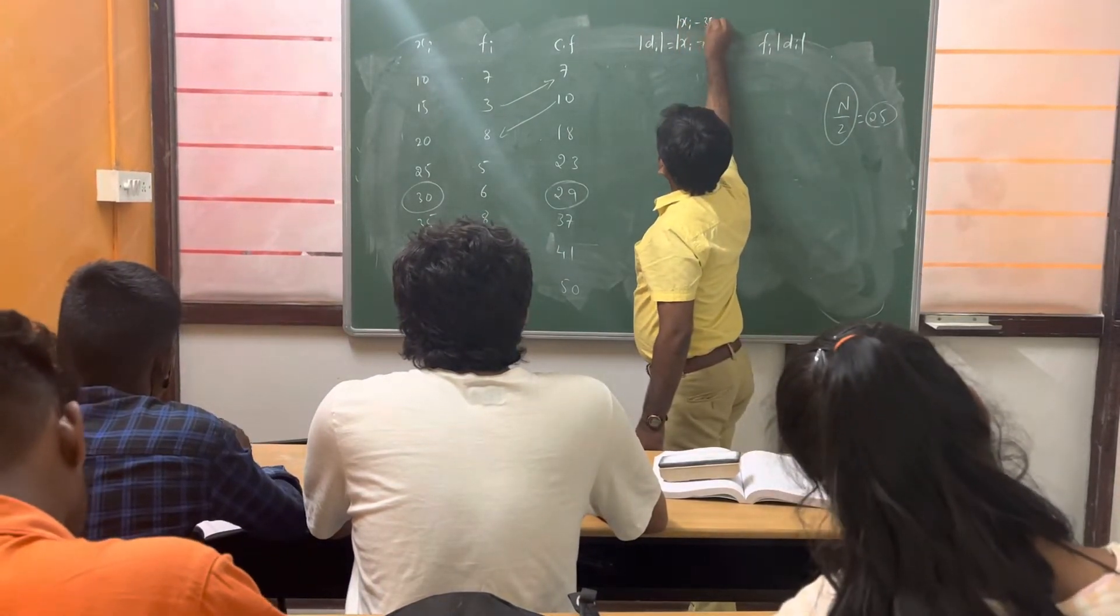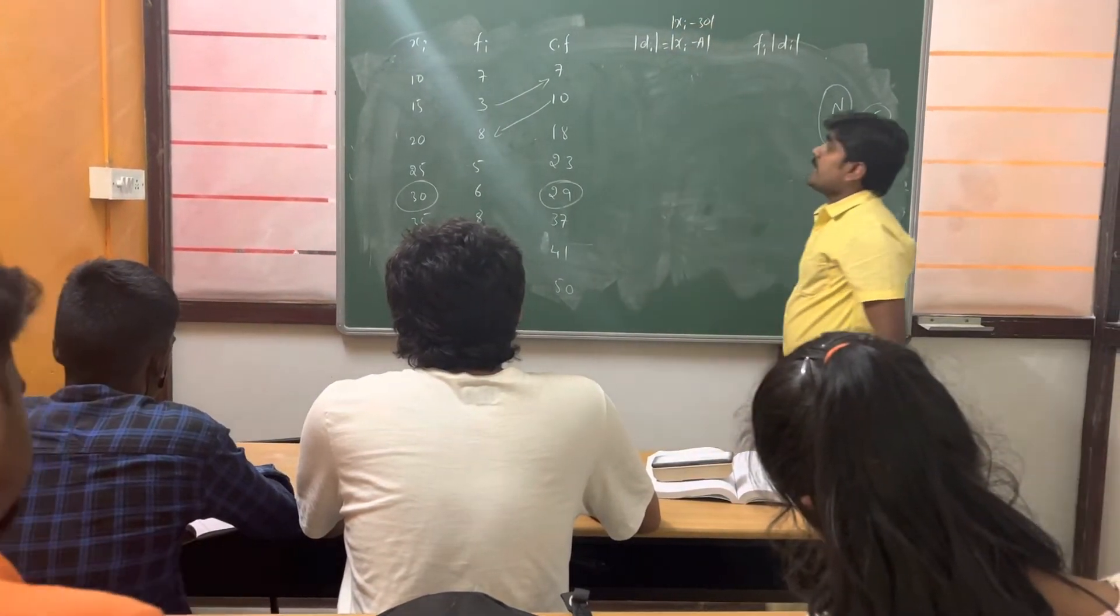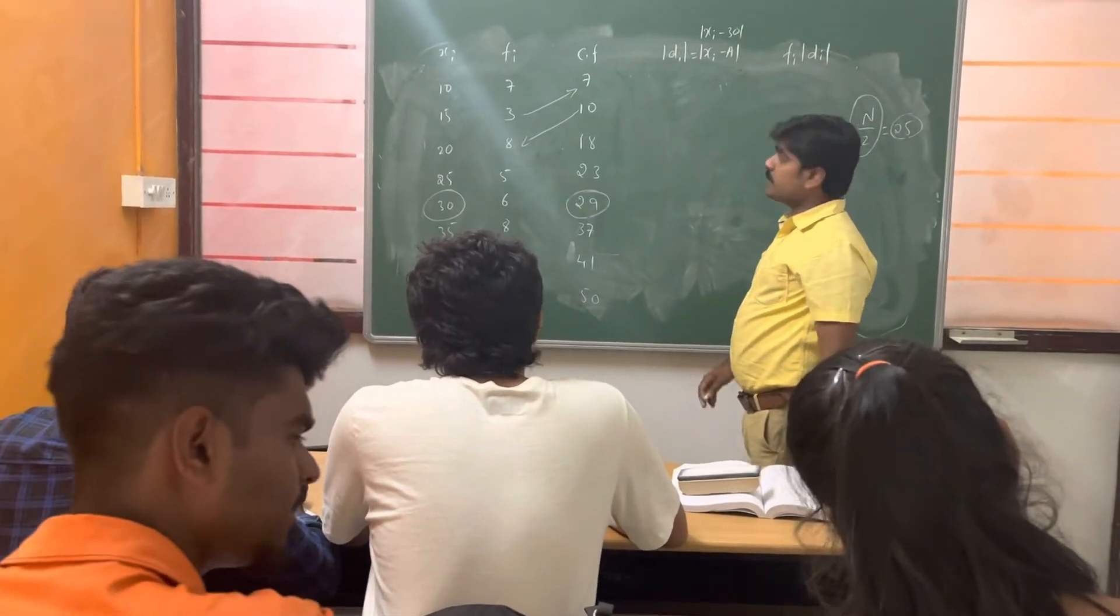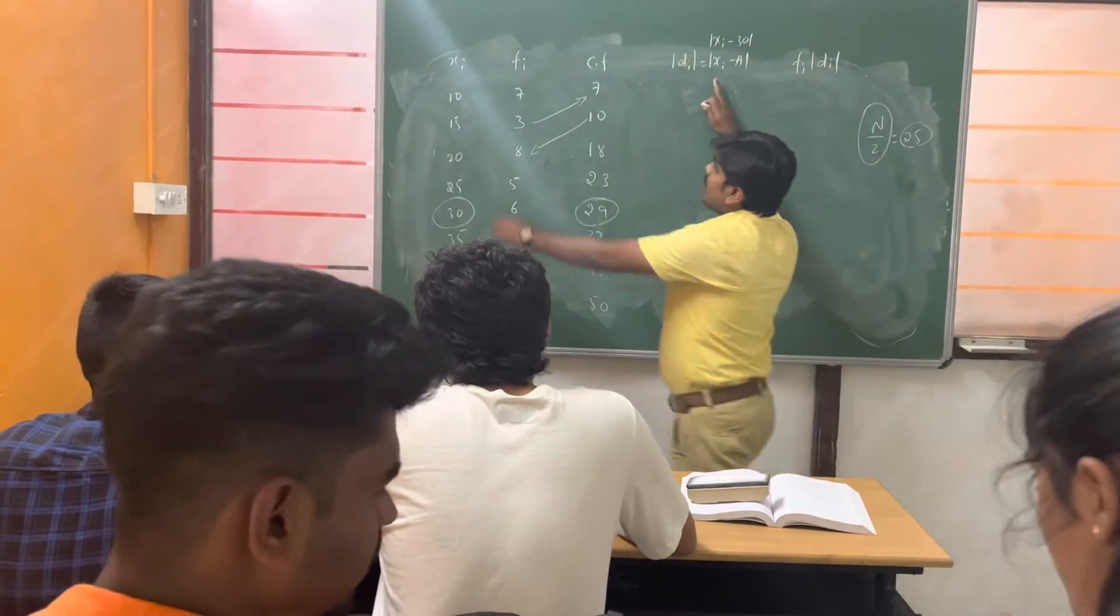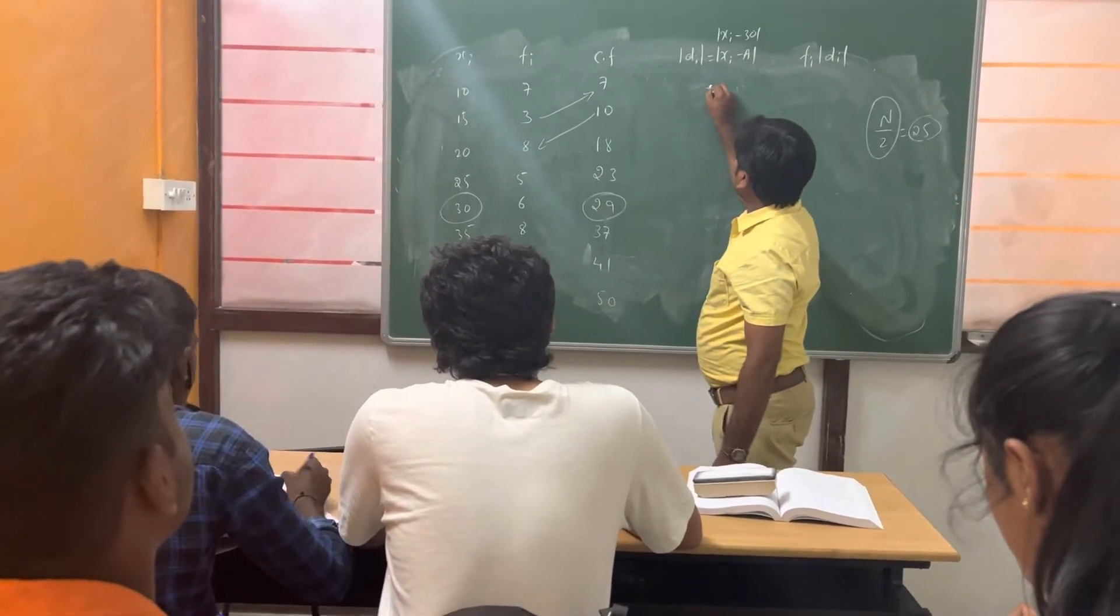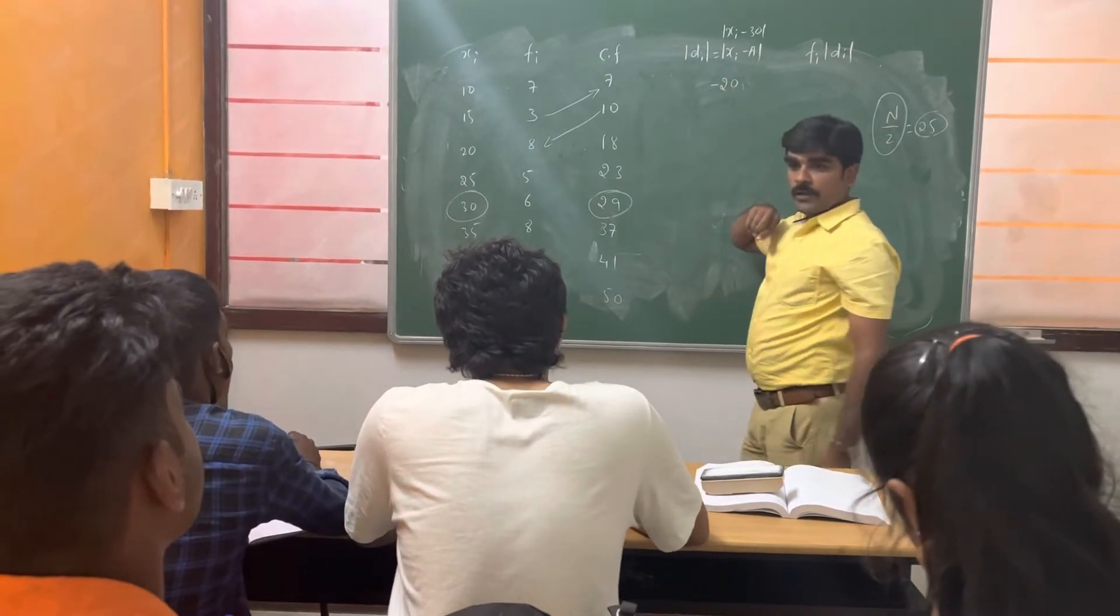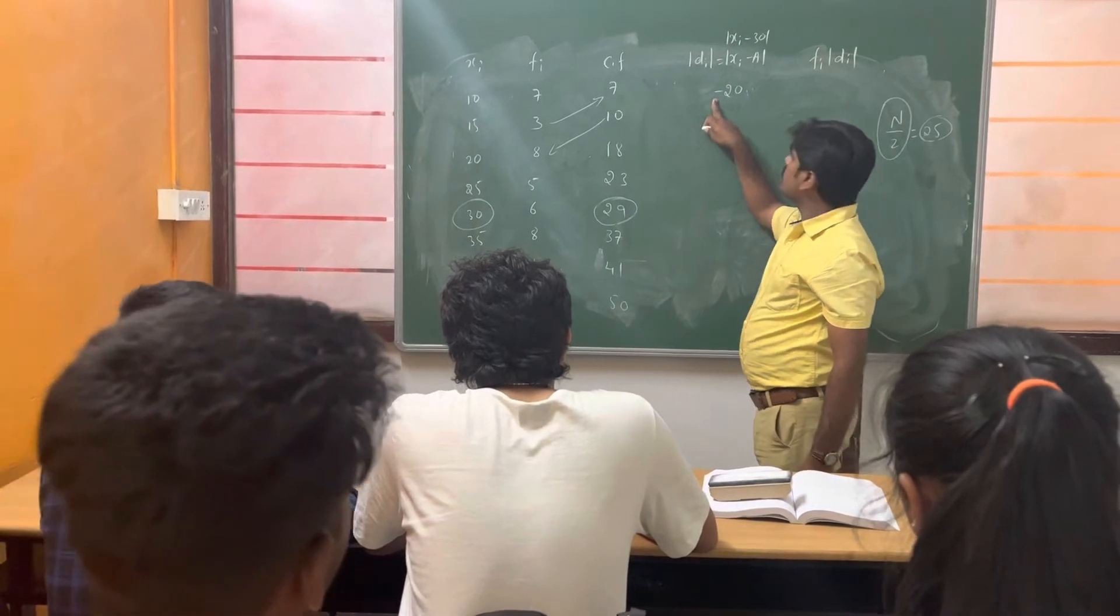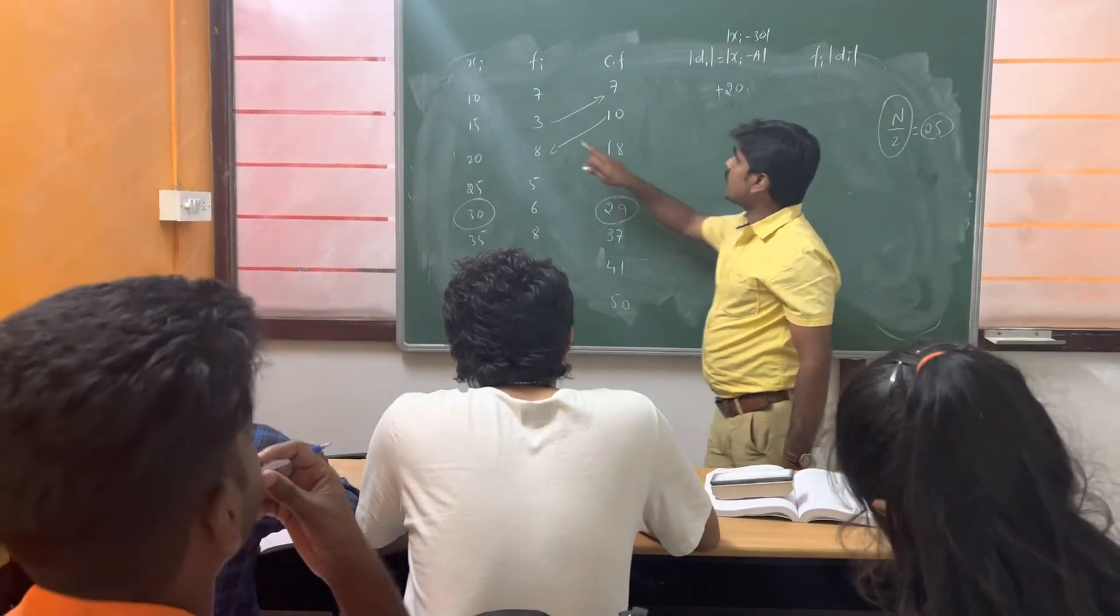That is, xi minus 30. Okay? Say the xi and 30. Simplify this. What will be the first result? See, 10 minus 30. 10 minus 30 is nothing but, it is actually minus 20. It is minus 20. Because of the mod, this should be positive. See, that is nothing but plus 20.